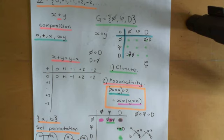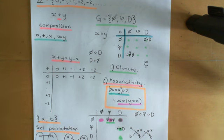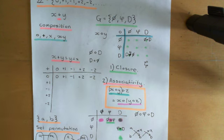Welcome back to this next video in which we are discussing the definition of a group. We're in the process of going through the axioms that the composition law must obey in order for this to be considered a group. When we construct a group, the first thing we do is create a set of symbols, and then we define a composition law on that set. In order to be considered a group, the composition law has to obey a bunch of axioms.